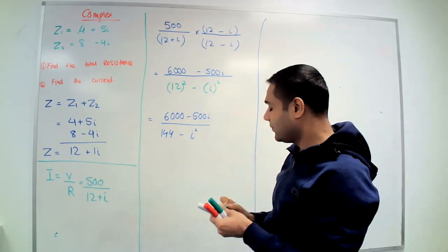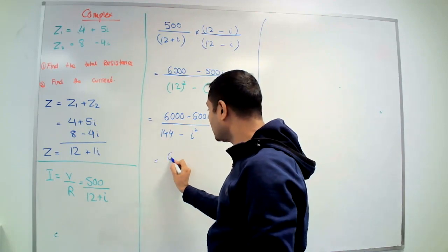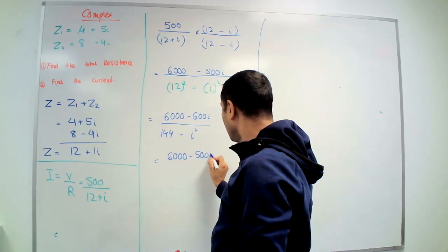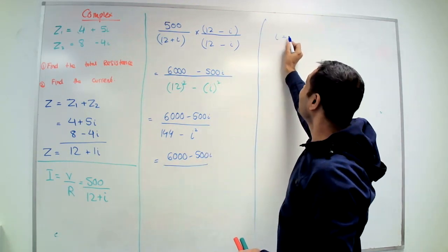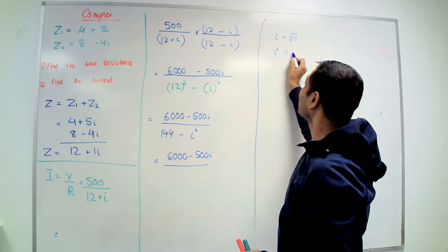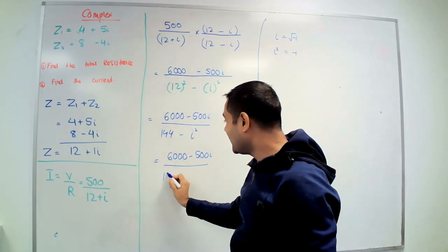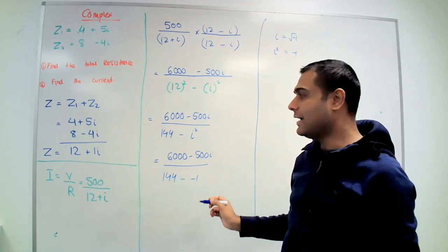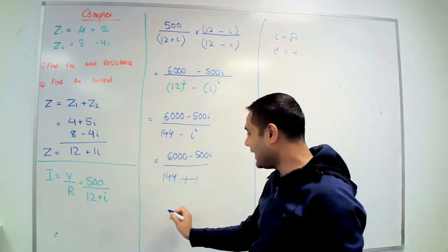That will become 144 minus i squared. Now what is i squared? How do you know it's minus one? You're right, you just know. Because i is root minus one, so i squared is actually minus one. So that will become 144 minus minus one, and minus minus makes plus.